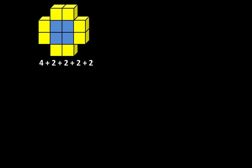Let's take a second look at how the structures were broken apart. Almost every time we find that there is more than one way to describe what we see. The first structure can be described as four plus two plus two plus two plus two, or it can be described as four plus four groups of two.